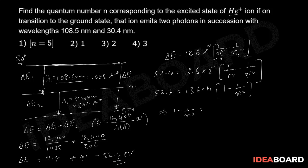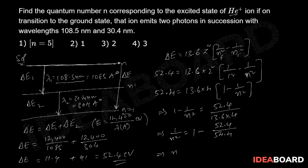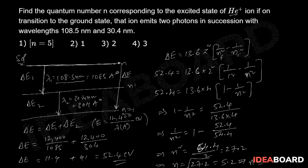From this: 1 − 1/n² = 52.4 / (13.6 × 4), so 1/n² = 1 − 52.4/54.4 = 54.4/n² = 27.2, giving n² ≈ 2, so n = √(54.4/27.2) ≈ √4 which leads to n ≈ 5. Therefore the correct answer is n = 5, corresponding to option 1.